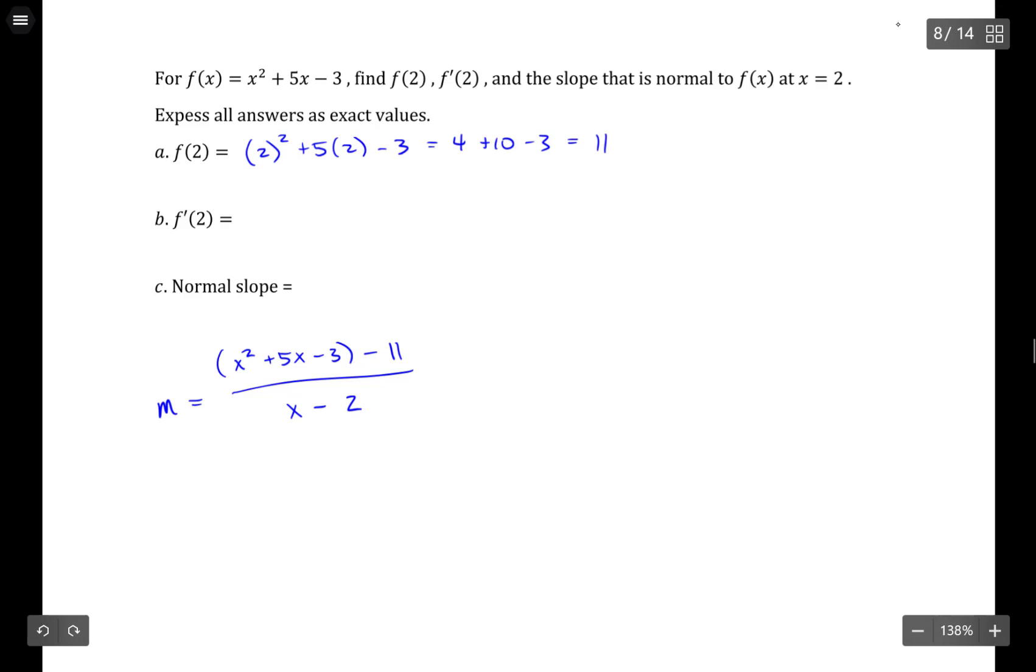Because I'm using the first point as (2, 11), just like we calculated the 11, and the second point as (x, x² + 5x - 3). So let's see, x² + 5x - 14, all over x - 2.